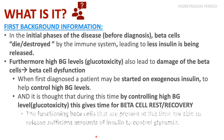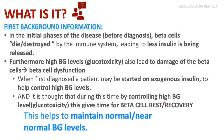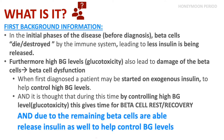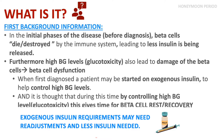By treating with exogenous insulin, this gives the remaining beta cells a break to recover. The functioning beta cells that are present at this time are able to release sufficient amounts of insulin to control glycemia and maintain normal or near-normal blood glucose levels. As a result, the exogenous insulin requirements may need readjustments and less insulin is needed.